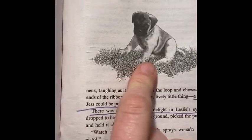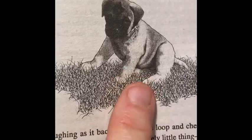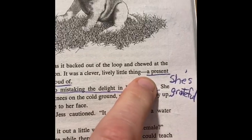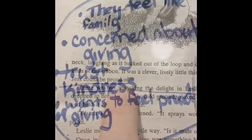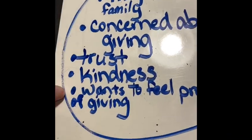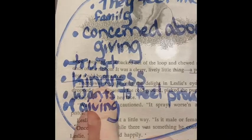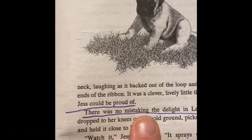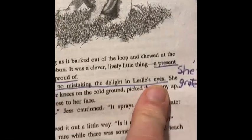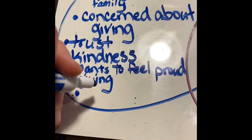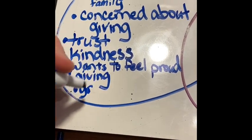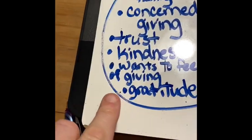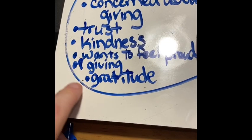Skipping to the part where Jess jumps off the bus to track down the puppy, Prince Tyrion, we find that Jess really wanted to get a present he could be proud of — so I wrote that Jess wants to feel proud of giving. I also underlined the next sentence in blue because it stood out: 'There was no mistaking the delight in Leslie's eyes.' She really liked it. That adds gratitude and thankfulness — this relationship can be characterized with gratitude.